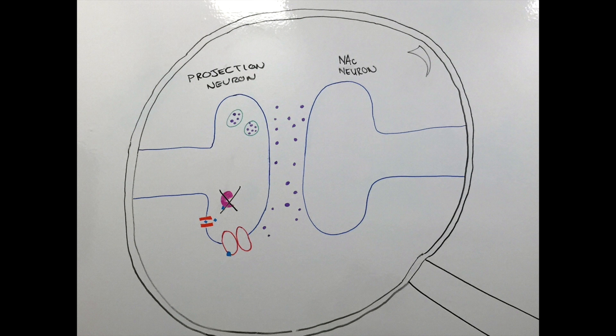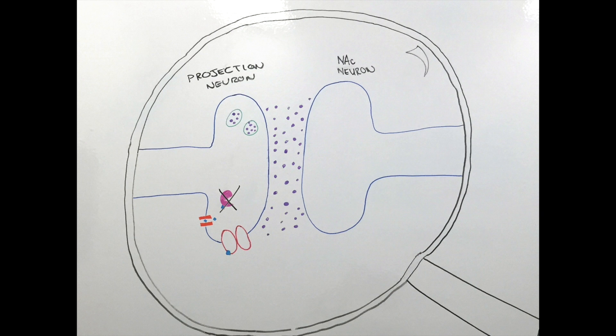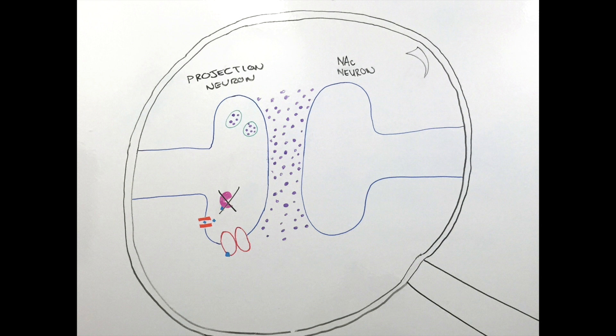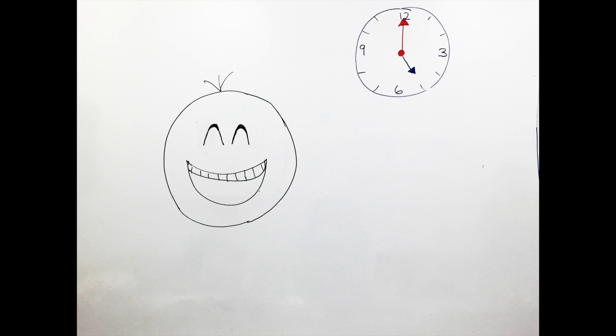This means that there will be an accumulation of dopamine in between the neurons, as it cannot be absorbed into the neuron or broken down. This prolongs the positive symptoms that you experience when on meth.